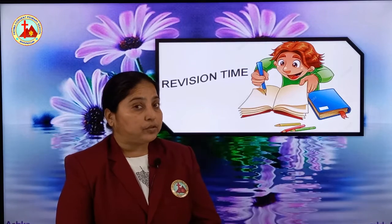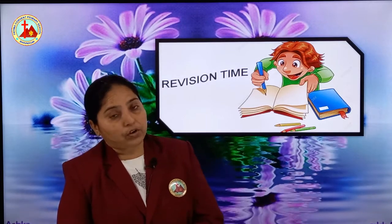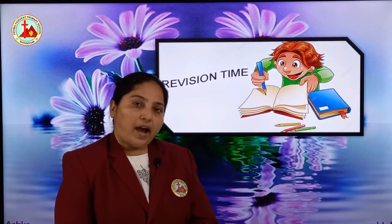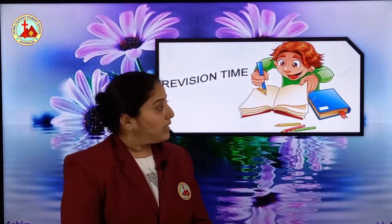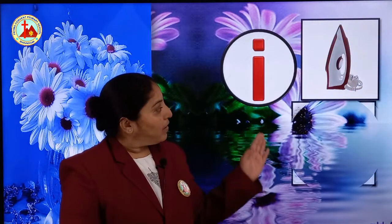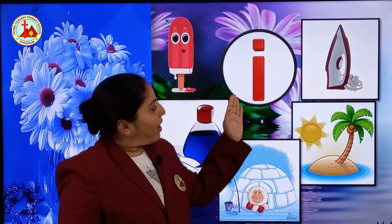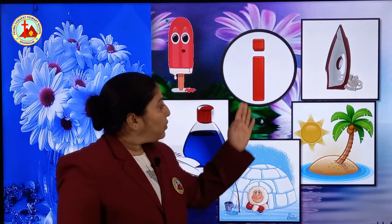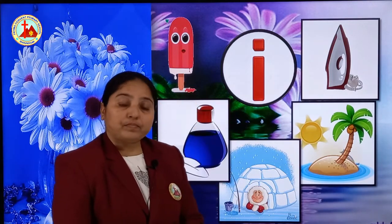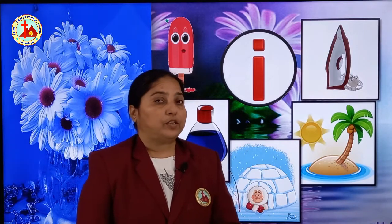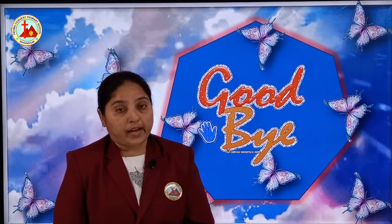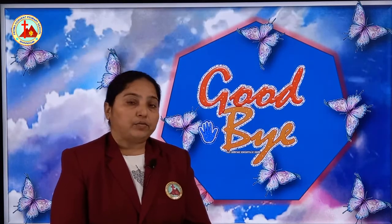So children, which letter did we learn today? We have learned letter small i and we also saw the pictures related to letter i. Let's revise one more time: I for iron, I for island, I for igloo, I for ink pot, and I for ice cream. Remember all the pictures. Today we learned how to write letter small i and revised all the pictures related to letter i. Write the letter i properly by following all the lines and send me the homework. Thank you, have a nice day.